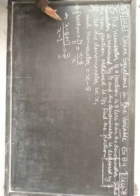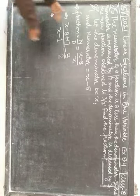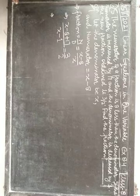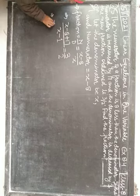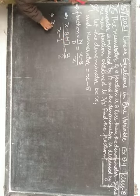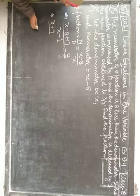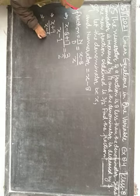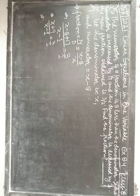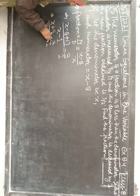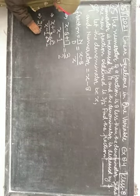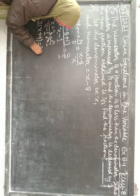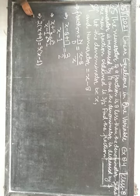Yeh jo linear equations hain, aapko kaise solve karna hai — pehle exercises mein dekh chuke hain. Ab humein equation banani hai aur solutions dekhne hain. minus 8 plus 17 is plus 9. To (x+9) upon (x-1) is equal to 3/2. Ab cross multiply karna hai aapko. To 2 se multiply karna hai aapne x+9 ko, aur 3 se multiply karna hai x-1 ko.